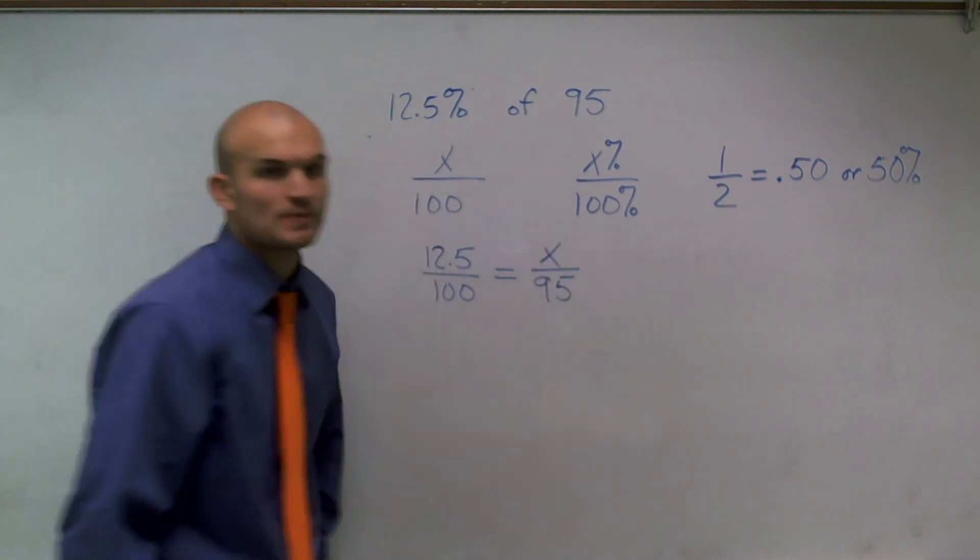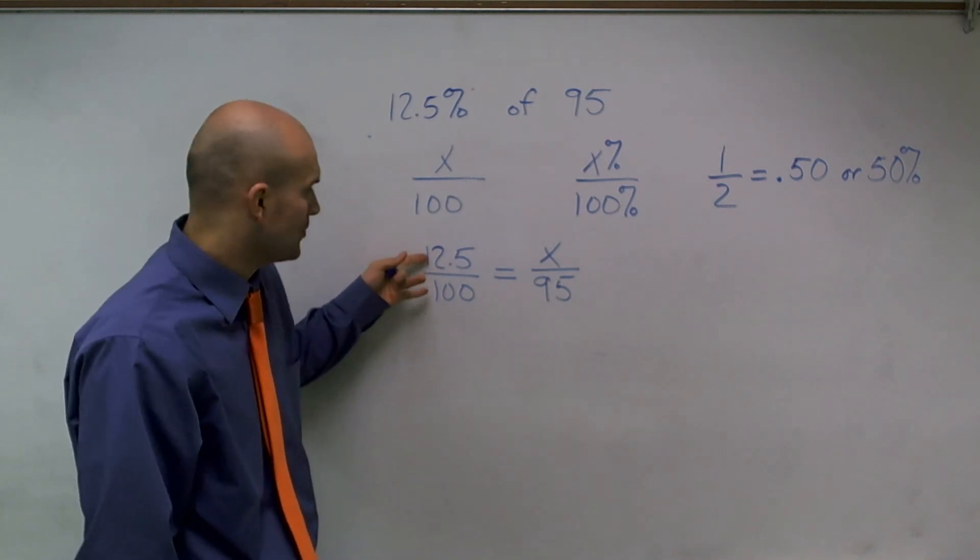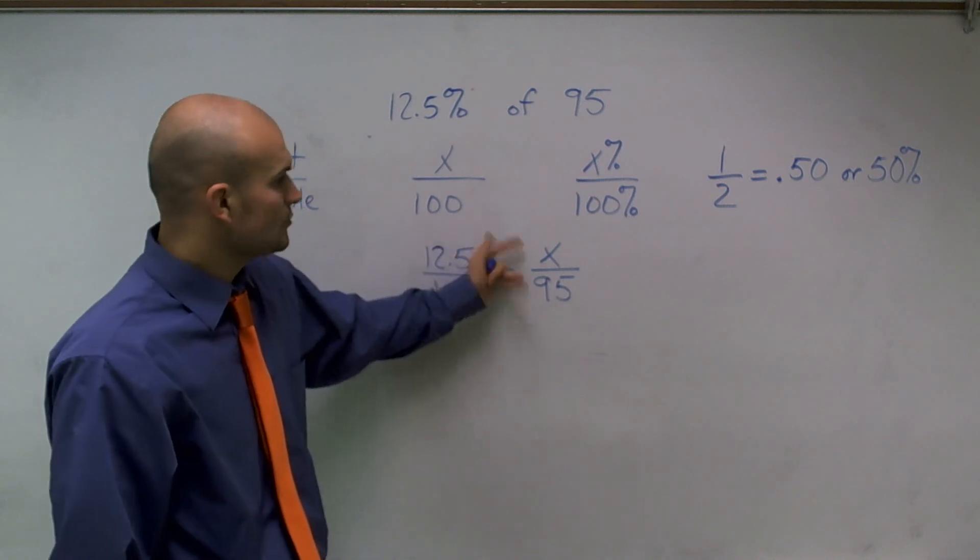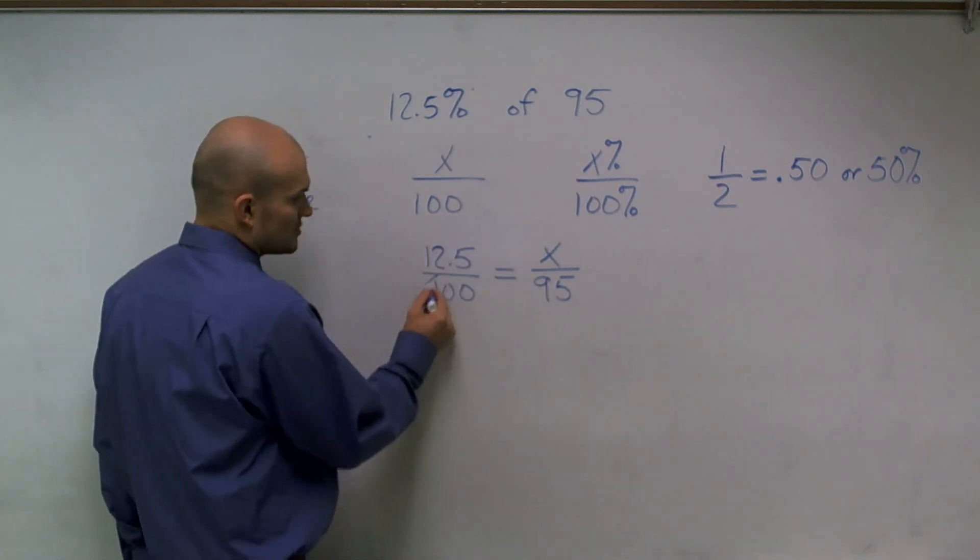what is that when my whole is 95, what is my part, which we call x? So what we've just created is a proportion. Here's your percentage, 12.5% out of 100, is equal to what part out of 95? And to solve proportions, we cross multiply.